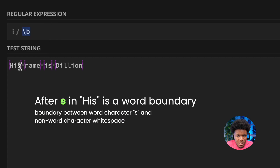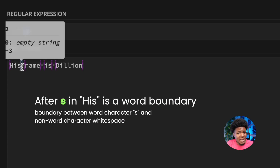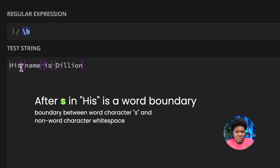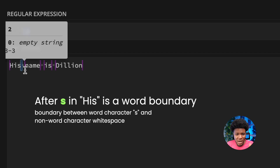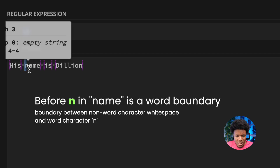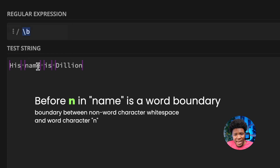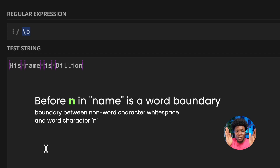Looking inside the string, we can see a word boundary after the character s. Why? Because between s and the whitespace, there is a boundary — s is a word character and the whitespace is a non-word character. We also see a boundary at the beginning of n, because the space is a non-word character and n is a word character, creating a word boundary between them.